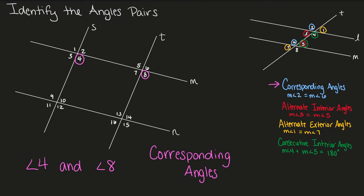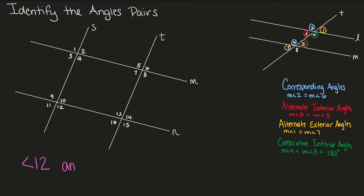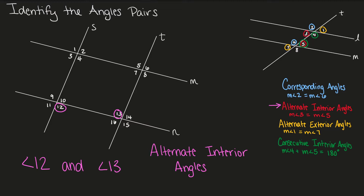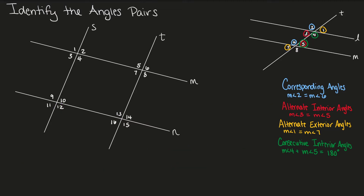Next, we have angle 12 and angle 13. Angle 12 and angle 13 are on opposite sides of our transversal and on the inside of our parallel lines. Therefore, angle 12 and angle 13 are alternate interior angles. Last, we have angle 10 and angle 13. These are both on the same side of our transversal and on the inside of our parallel lines, so angle 10 and angle 13 are consecutive interior angles.